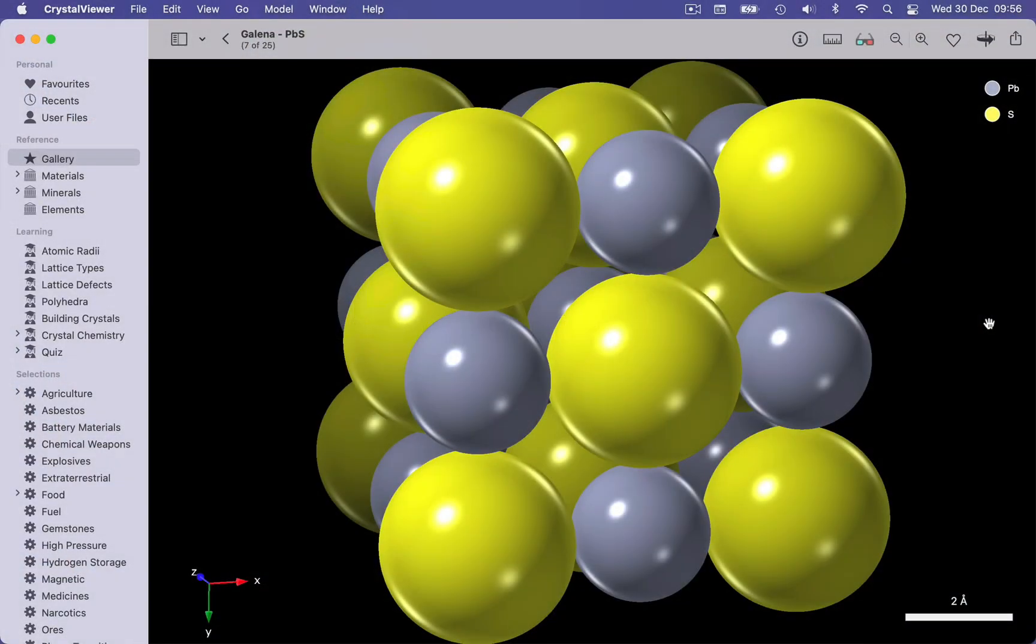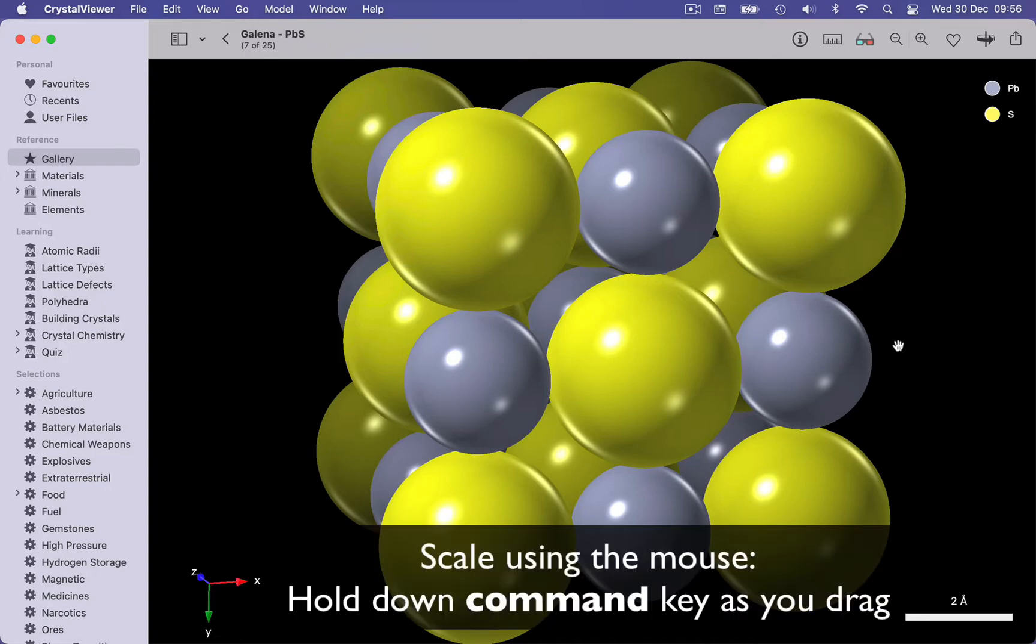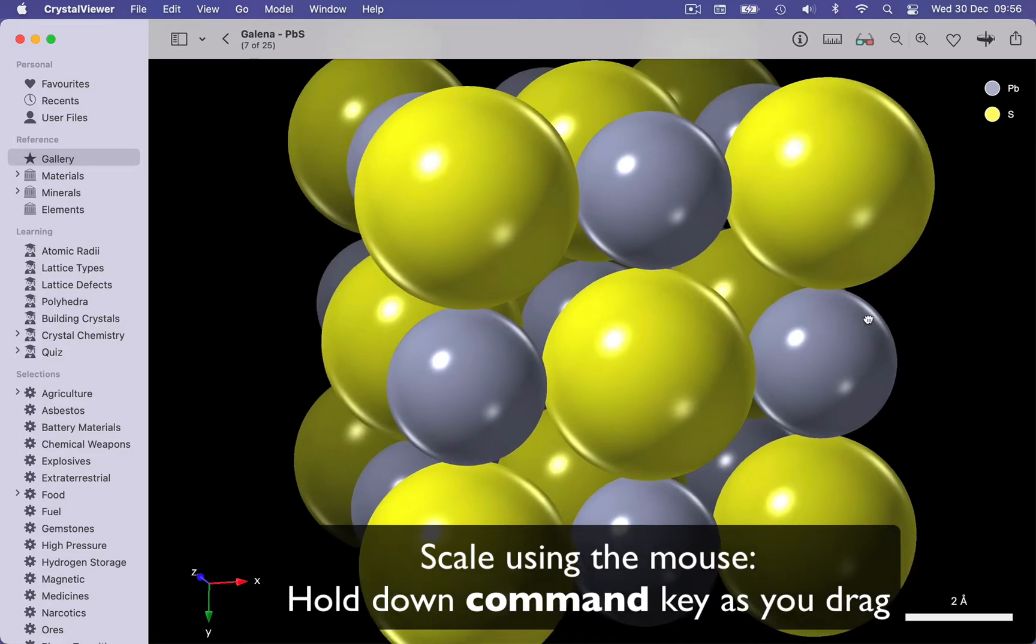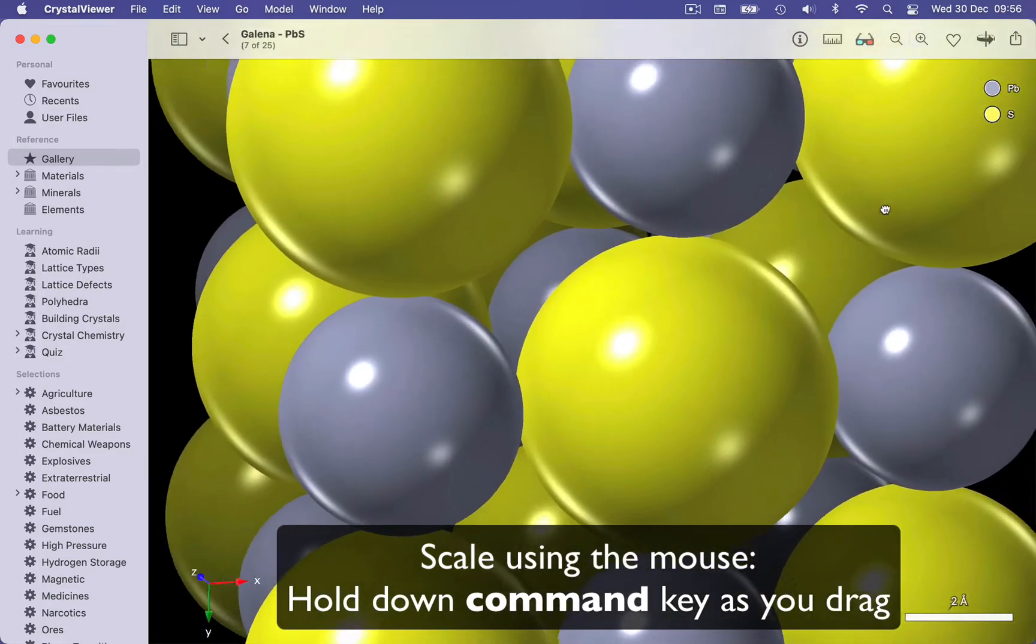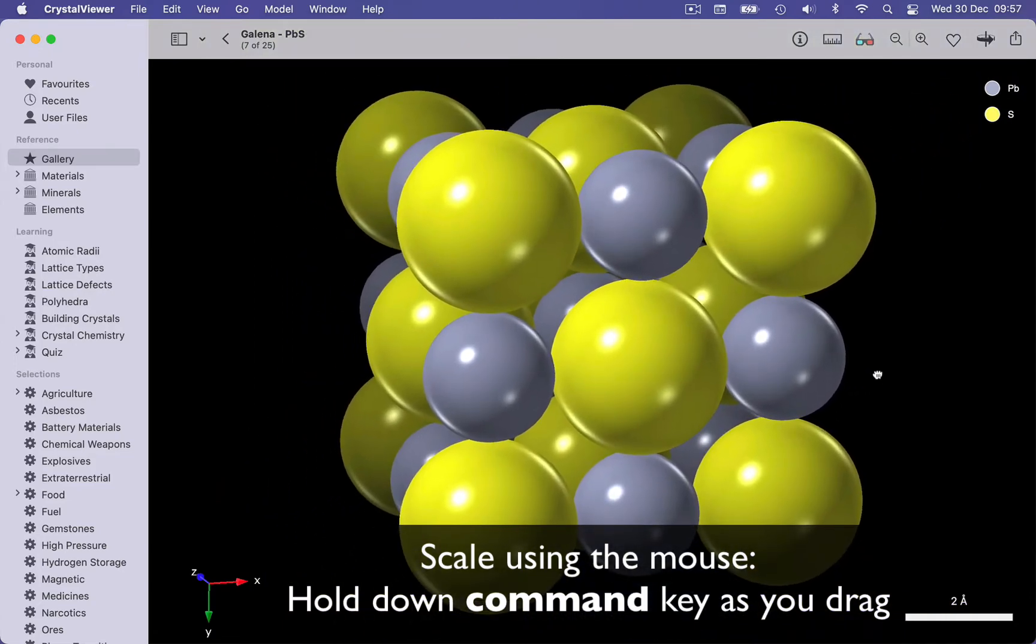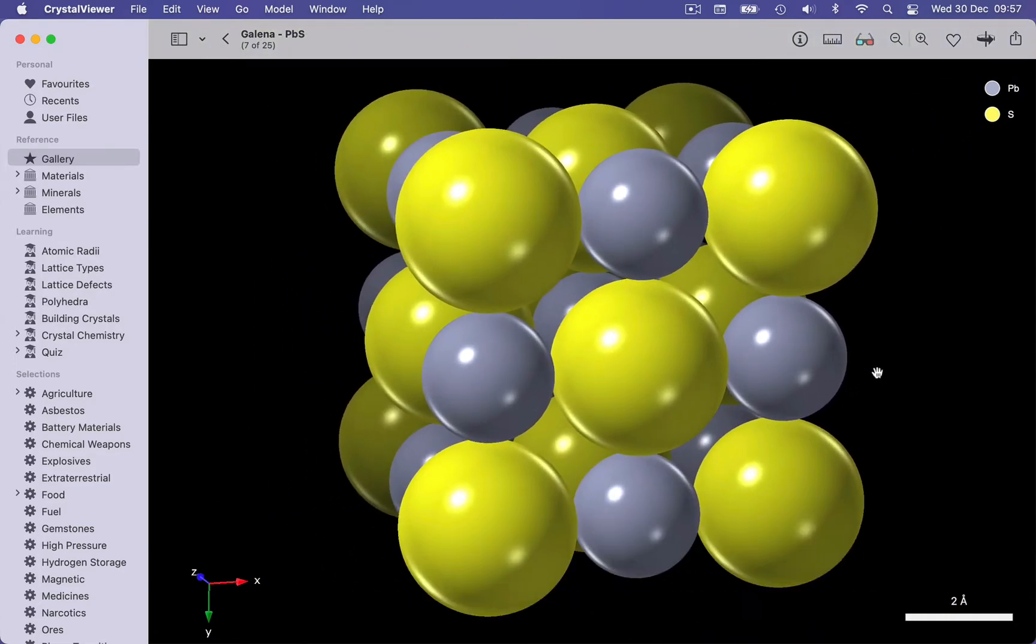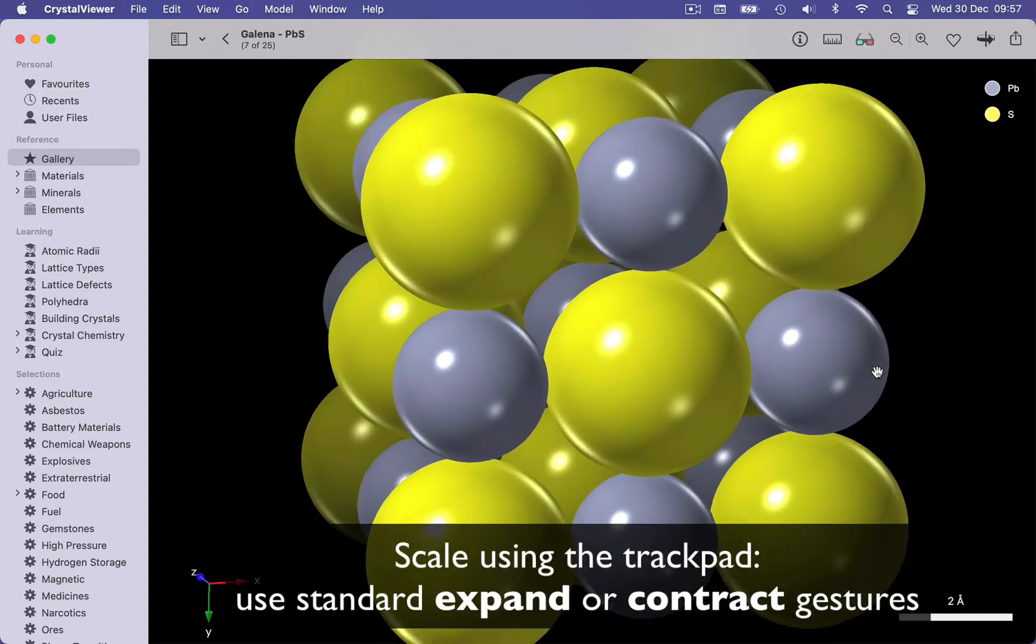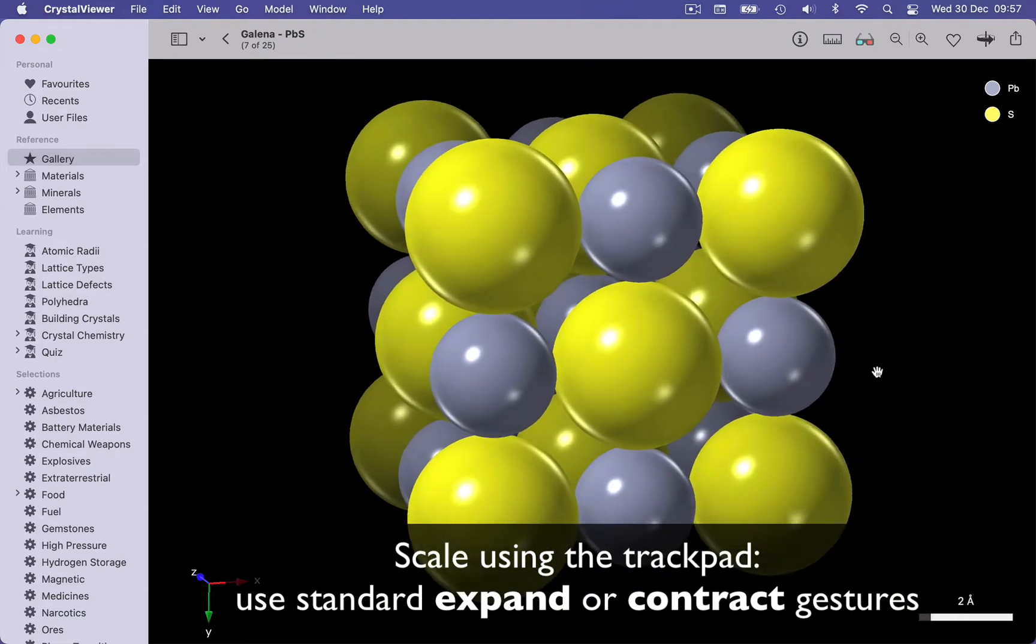Now let's talk about scaling. When you open a structure in Crystal Viewer, it is auto-scaled to fit the available space. But we can override this. We can scale using the mouse, and to do this we need to hold down the Command key or the Windows equivalent of the Command key, and then we can click and drag up to make it bigger, or down to make the model smaller. Perhaps it's more intuitive to use a trackpad. And then we can use a simple expand or contract gesture to change the scale.